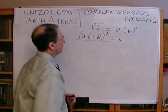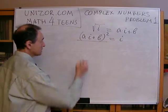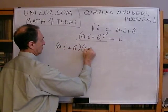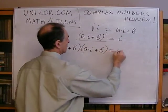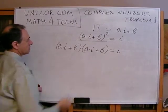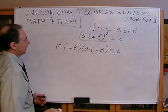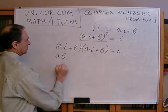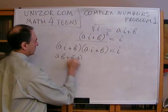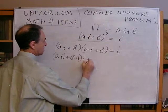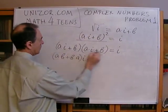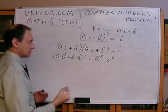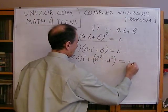First, let's write down what this actually is — it's a multiplication: (ai + b) times (ai + b). Let's open all the parentheses. As the imaginary part we will have a times b plus b times a, which is 2ab, times i. As the real part we will have b times b which is b squared, and a times a times i squared which is minus a squared, because i squared is minus one.